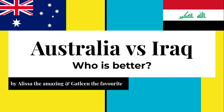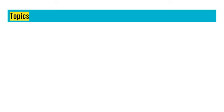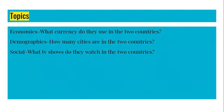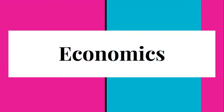Hello dear classmates. This wonderful presentation was brought to you by Alyssa and Kathleen. In this presentation we will show you the differences of Australia and Iraq in three categories which are economics, demographics, and social. First up is economics.